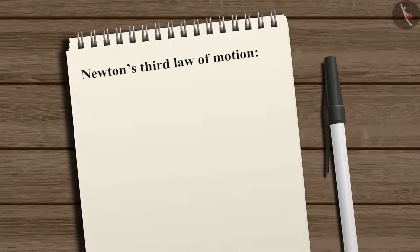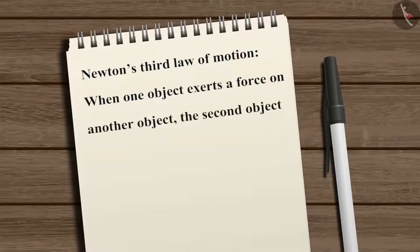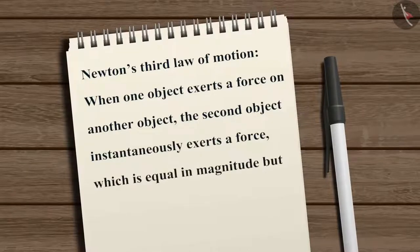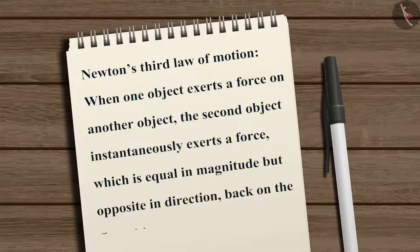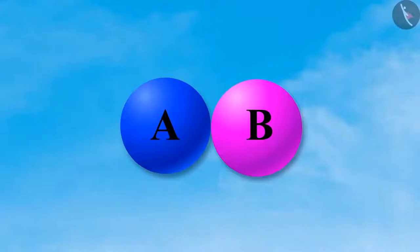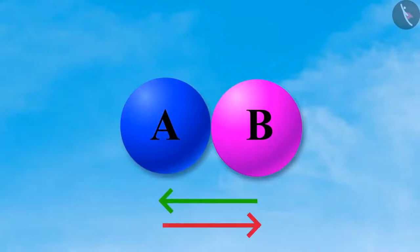Newton's third law of motion says that when one object exerts a force on another object, the second object instantaneously exerts a force which is equal in magnitude but opposite in direction back on the first object. These two forces always act on two different objects, meaning each object exerts one force on the other.